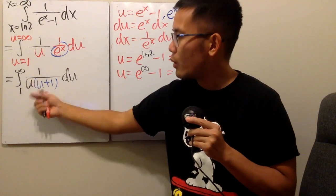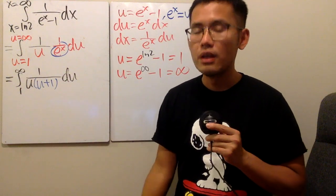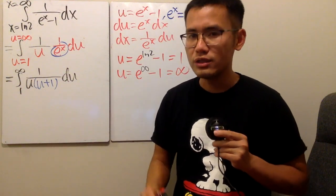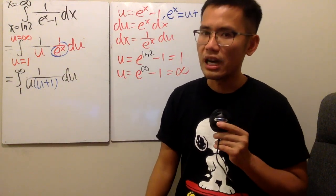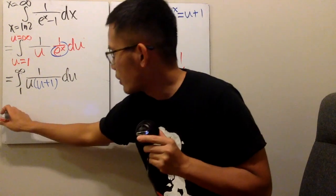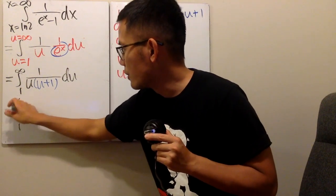This is u to the first power, times u to the first power plus one. So, we can do partial fractions nicely, right? And we can even use the cover-up method. Very good. So, here we go. This is going to be the integral from one to infinity.